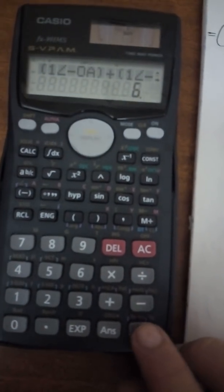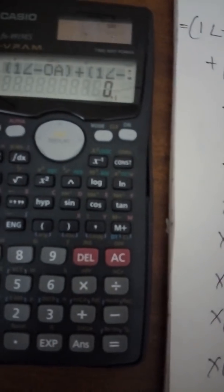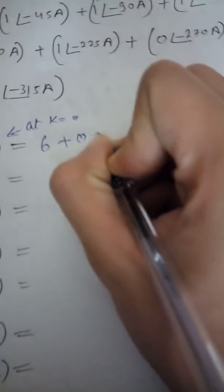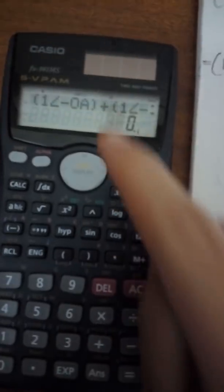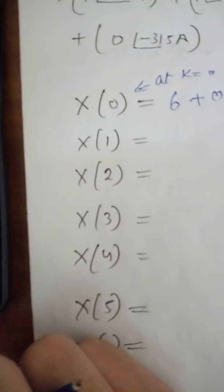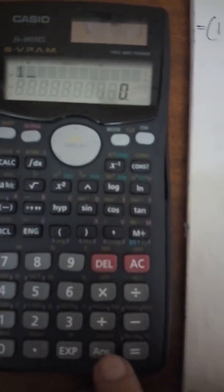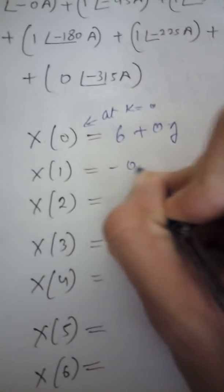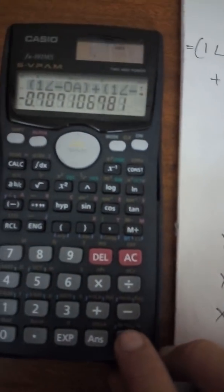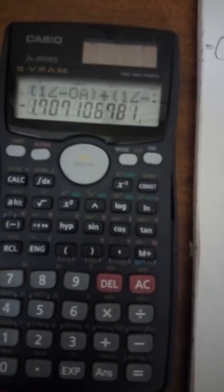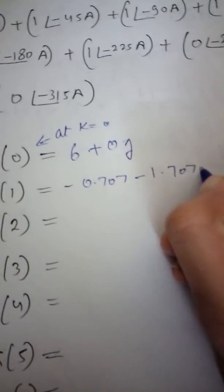Press Shift then equals to get the complex value: 6 plus 0j. Now press Calc again and enter A equals 1 for X(1). The real part is minus 0.707, and pressing Shift equals gives the imaginary part as minus 1.707j.